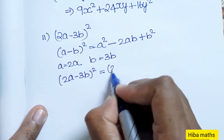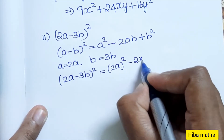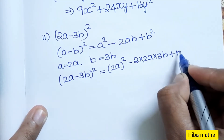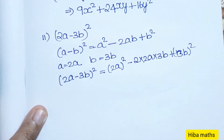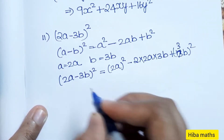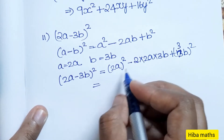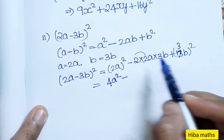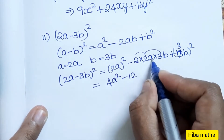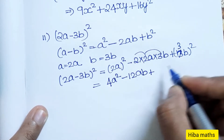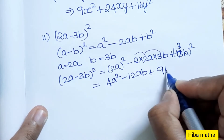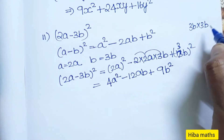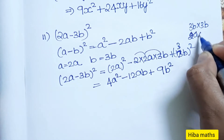Substituting: (2a − 3b)² equals (2a)² minus 2 into 2a into 3b plus (3b)². So the answer is 4a² minus 12ab plus 9b².